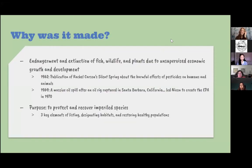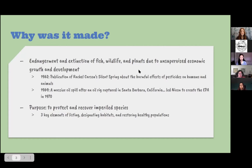The Endangered Species Act was created because a lot of unsupervised economic growth and development caused the endangerment and extinction of different species of fish, wildlife, and plants. There were several events that pushed the public mindset for the government to protect wildlife, which is important for a law to get successfully approved.